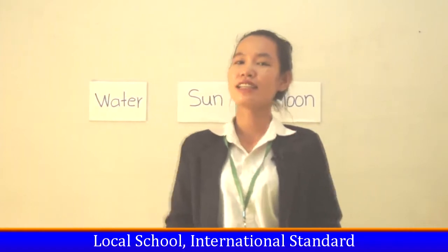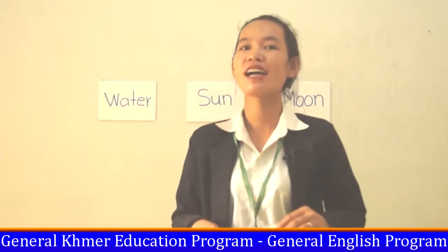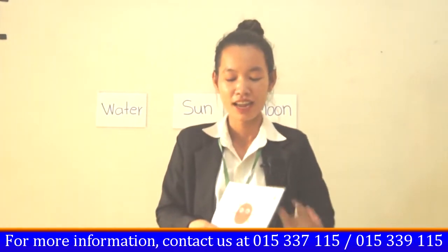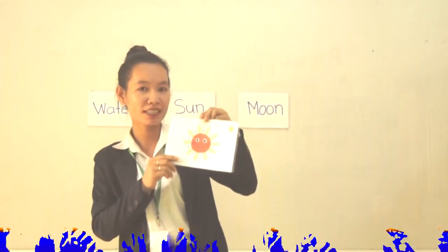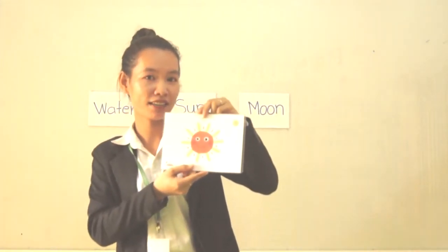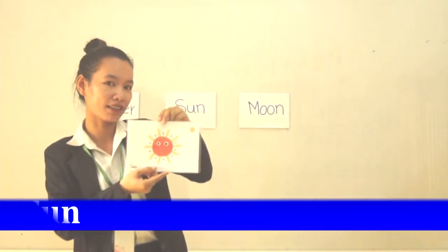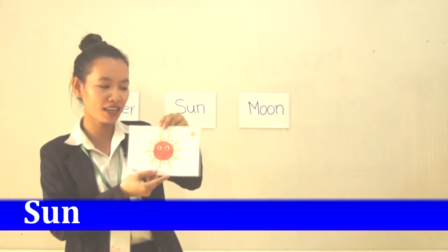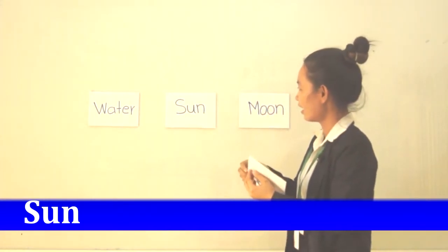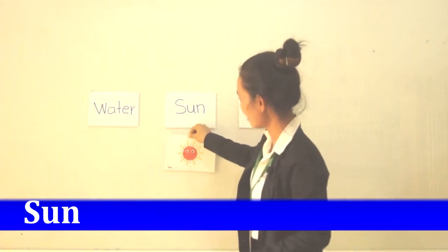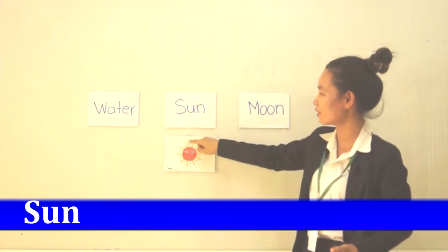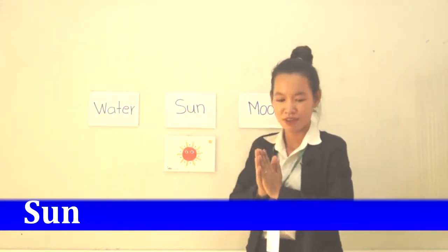Now let's go and find the word for each picture. What is this? This is Sun, right? Let's go and find the word. Where is the word Sun? Here it is — Sun! Wow, Sun!